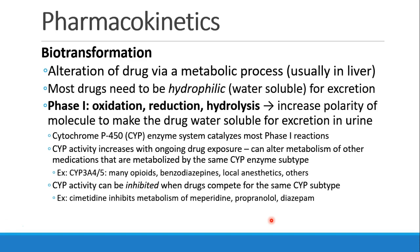Biotransformation is really metabolism — the alteration of a drug by some metabolic process, which usually, but not always, occurs in the liver. Most drugs need to be hydrophilic, that is water-soluble, in order to be excreted out of the body. Phase 1 reactions include oxidation, reduction, or hydrolysis — chemical processes that increase polarity and make the drug more water-soluble so it can be excreted in the urine. The cytochrome P450 enzyme system is responsible for most phase 1 reactions.